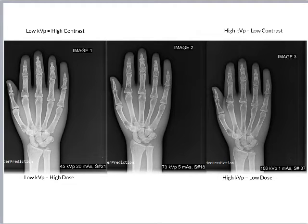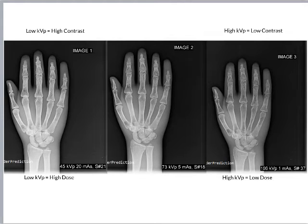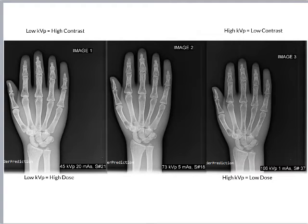On a Fuji system, an S number that is low equals a relatively high exposure, so this technique is kind of hot for this system, but it doesn't vary all that much — so maybe we didn't perfectly apply the 15% rule. Regardless, the image on the left has a low KVP and a relatively high mAs, and the image on the far right has a really high KVP and a really low mAs.